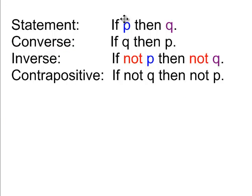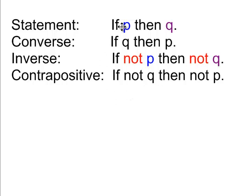Here's a quick summary table. A statement: if P, then Q. The converse: you switch the positions of the hypothesis and the conclusion. The inverse: keep the original order but throw 'nots' in — not P, then not Q. The contrapositive: rewrite the order as a converse and then put 'nots' in front of both. That's basically it in a nutshell.